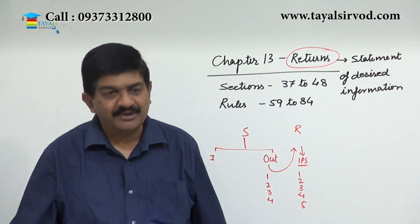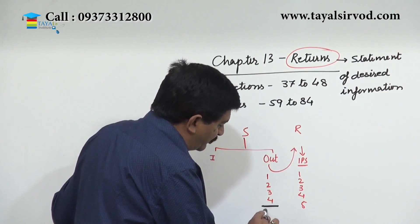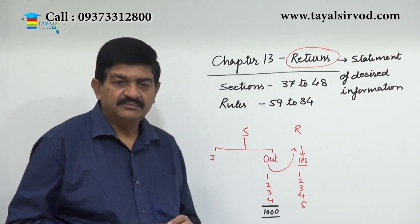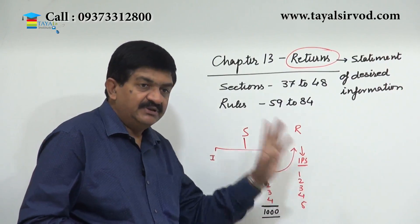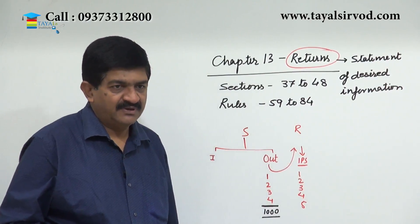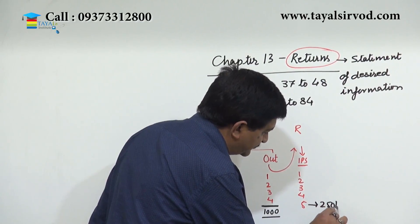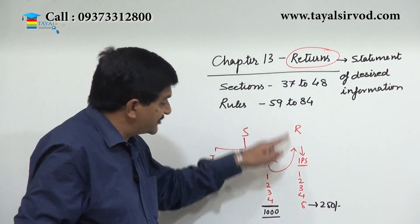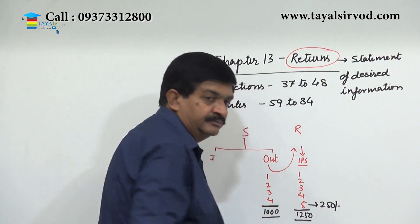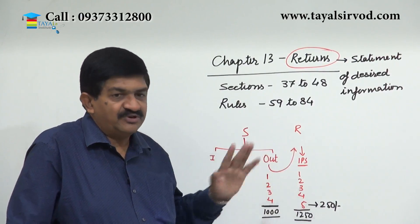Now imagine what happens. For all four output supplies, the supplier has paid tax of, say, rupees 1000. The recipient will get the credit of that 1000 rupees because supplies one, two, three, four are matching. But what about this fifth supply? On the fifth supply there is another tax of 250 rupees. The recipient is claiming credit of 1250. But the supplier has paid only 1000 rupees — how much credit should be given?